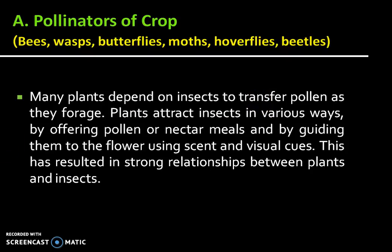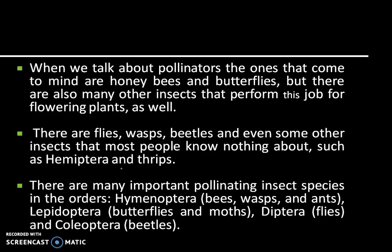Plants attract insects in various ways by offering pollen or nectar, nectar guides, and by directing them to the flower using scent and visual cues. This has resulted in strong relationships between plants and insects. When we talk about pollinators, the ones that come to mind are honey bees and butterflies.